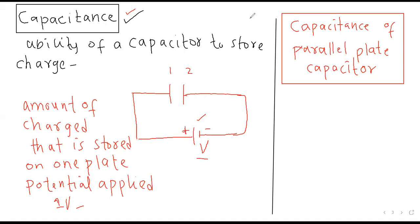Battery کا positive terminal first metallic plate کے electrons کو اپنی طرف کھینچتا ہے۔ پہلی plate سے electrons نکل کر battery کی طرف جاتے ہیں تو پہلی plate پر positive charge بچتی ہے۔ Induction کے process سے دوسری plate negative ہو جاتی ہے اور اسی طرح energy جمع ہوتی ہے۔